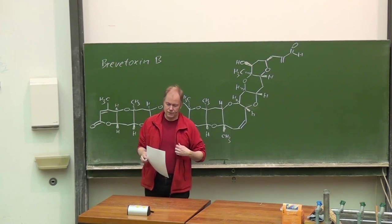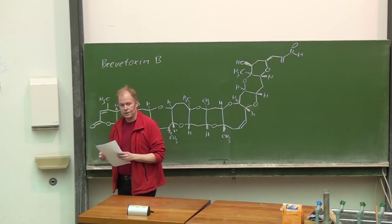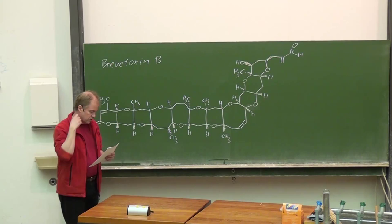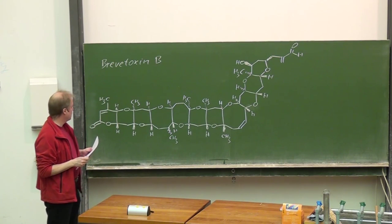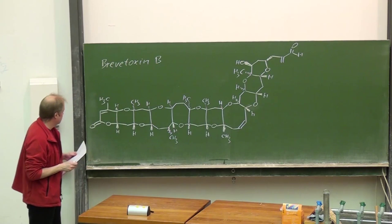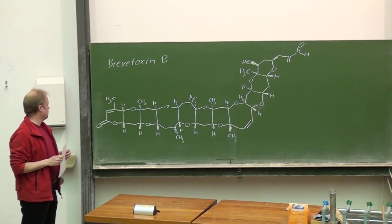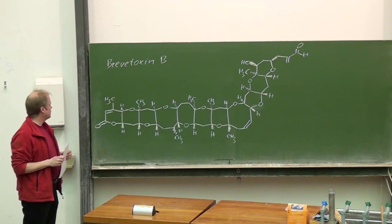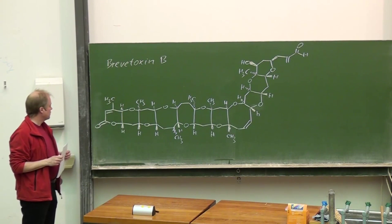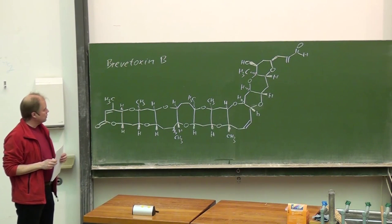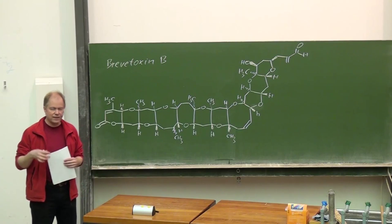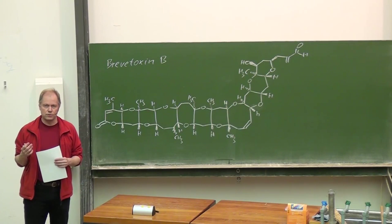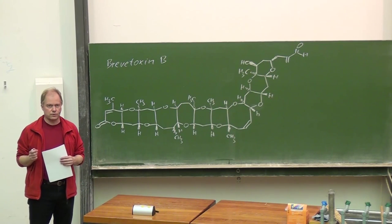Welcome to part 27 of the lecture on designing organic syntheses. You've already noticed this exciting molecule drawn on the blackboard — it's brevetoxin B, and you could call it one of those 8,000-meter mountains in natural product synthesis.